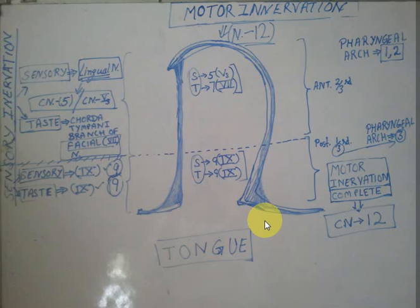In the posterior one-third of the tongue, it's very easy: both somatic sensory and taste sensations are from cranial nerve 9, the glossopharyngeal nerve. That finishes the sensory innervation of the tongue.